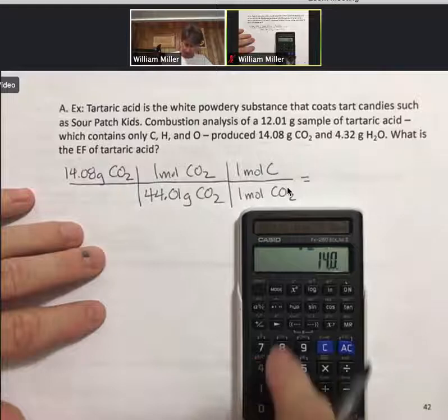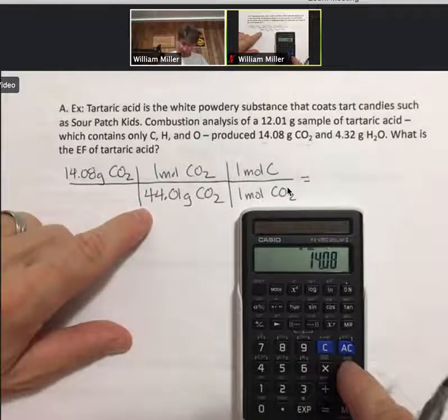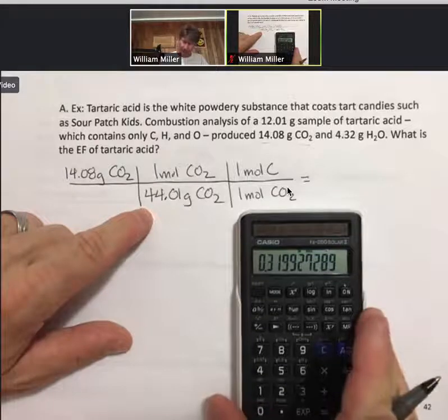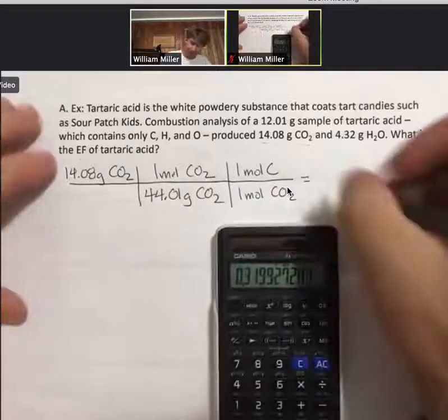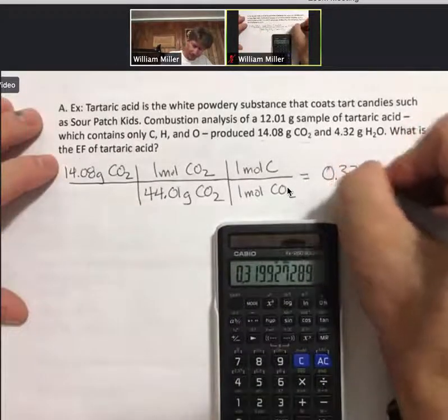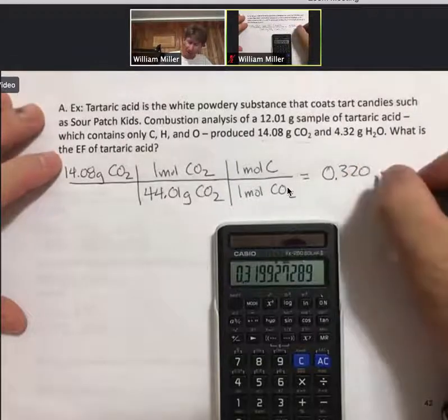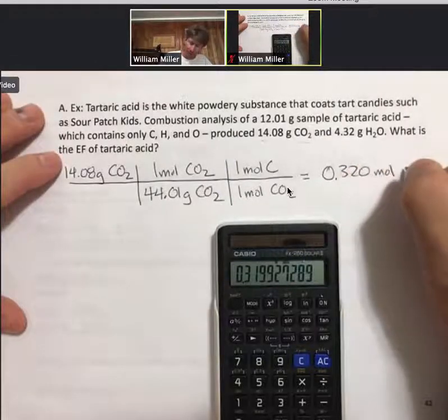And if we do the math here, 14.08 divided by 44.01, I get 0.320 rounded to three sig figs, moles of carbon.